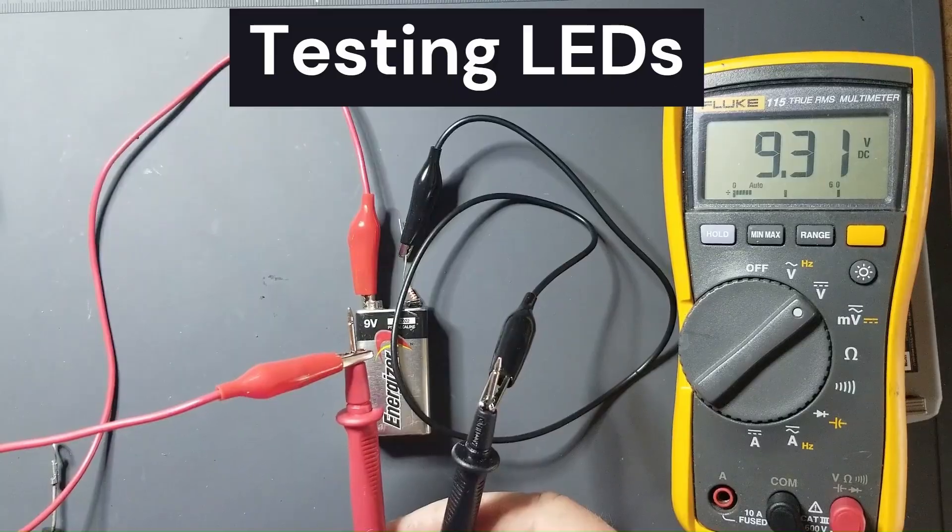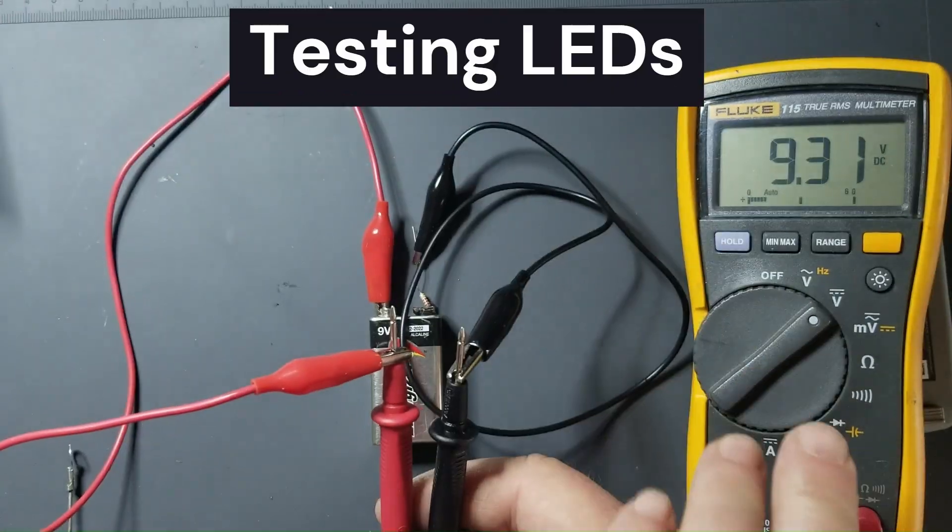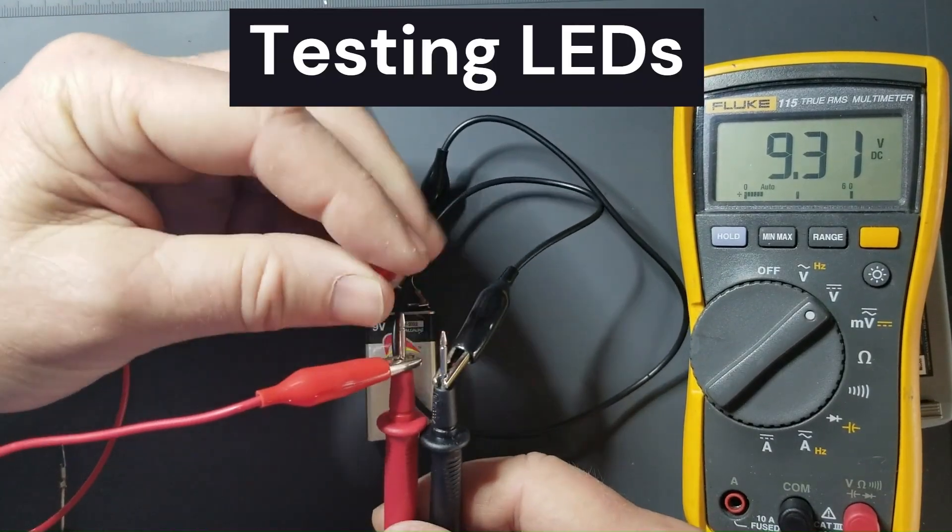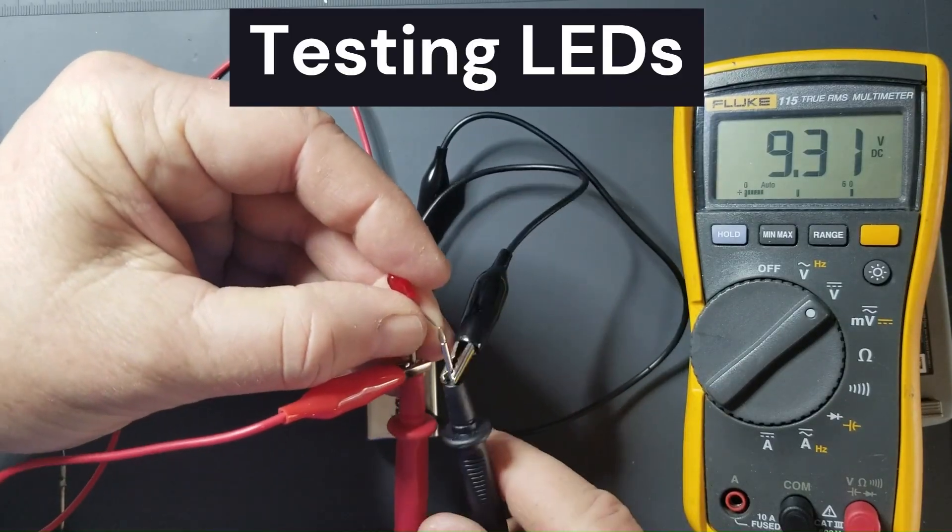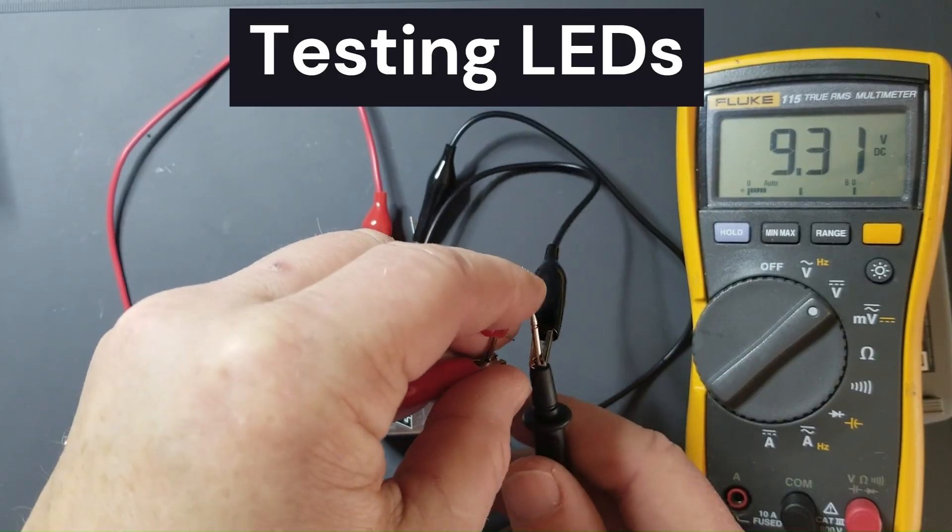You can also use this to test LEDs. This can test LEDs that have forward voltage drops up to eight or nine volts. However you want to make sure that when you're testing LEDs you hook them up in the proper orientation. Otherwise they can be damaged if you hook them up backwards.